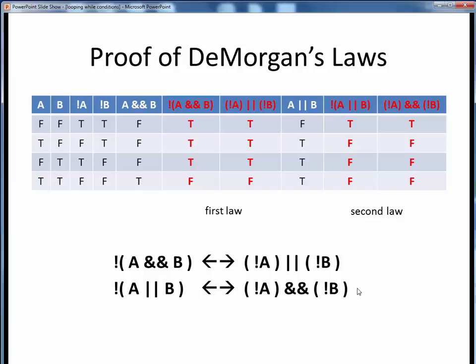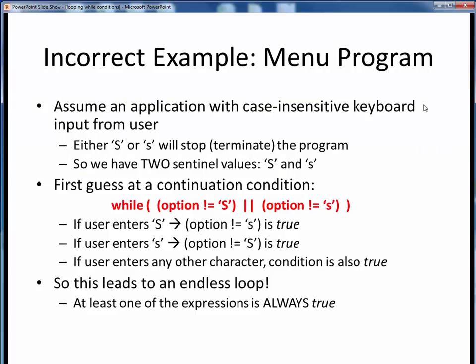Next, let's start looking at how we'd put these laws to some actual use in a program setting. Consider the case where we'd like to write an application that handles some user keyboard input in a case-insensitive fashion. In other words, we want either a capital S or a lowercase s to terminate our program's execution. So therefore, we have these two sentinel values. If we wanted to use these as part of our while loop's continuation condition, if we didn't think about it too much, we might come up with something like this as a first stab.